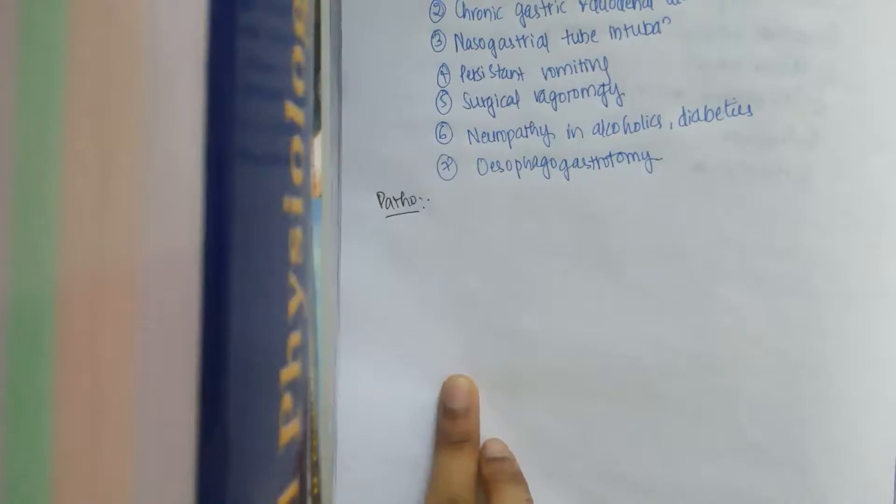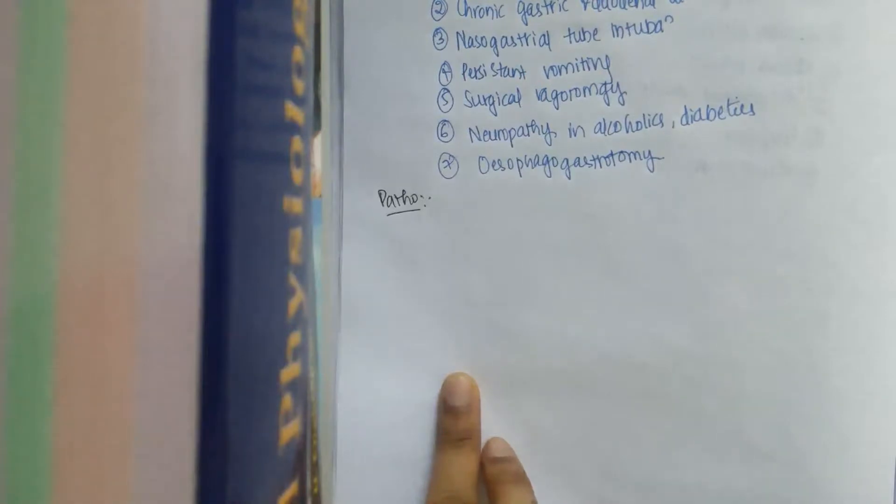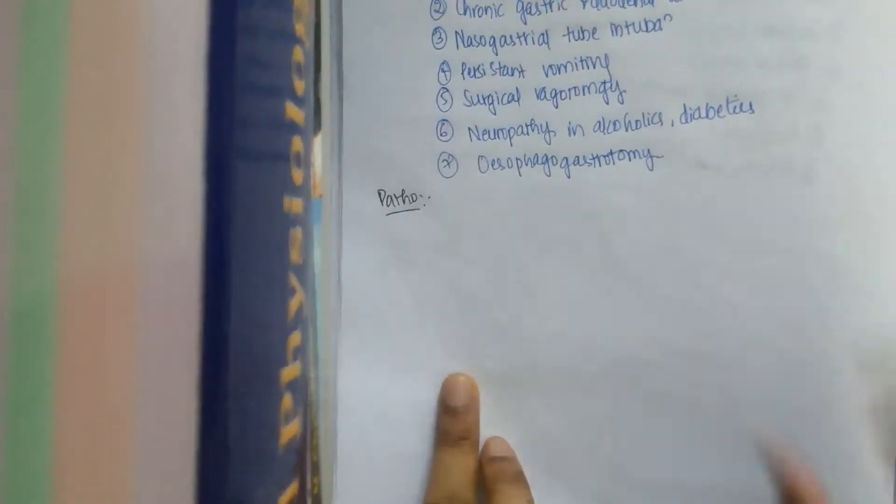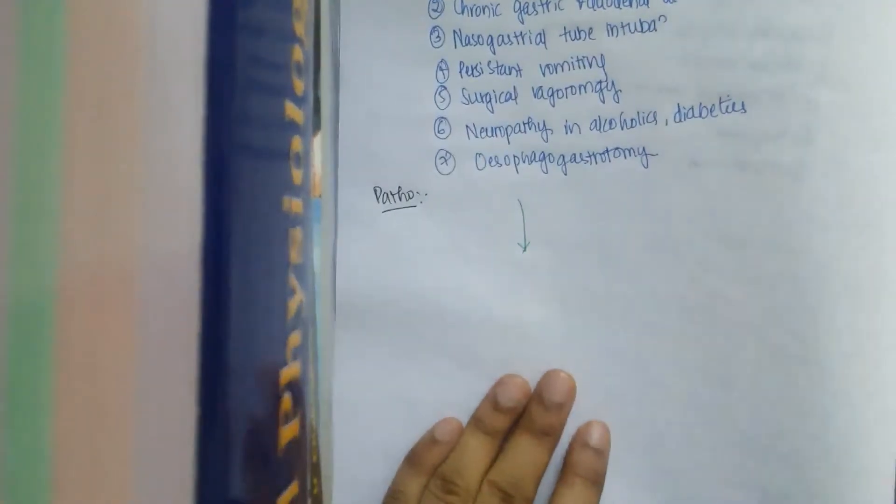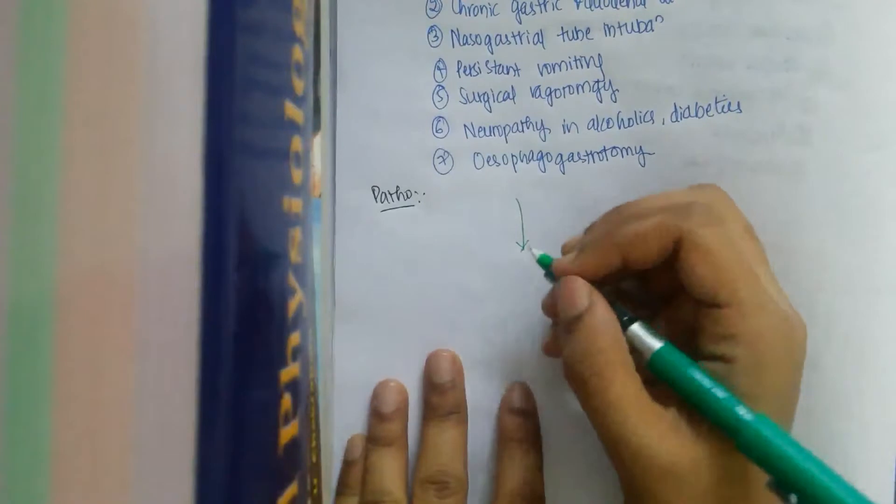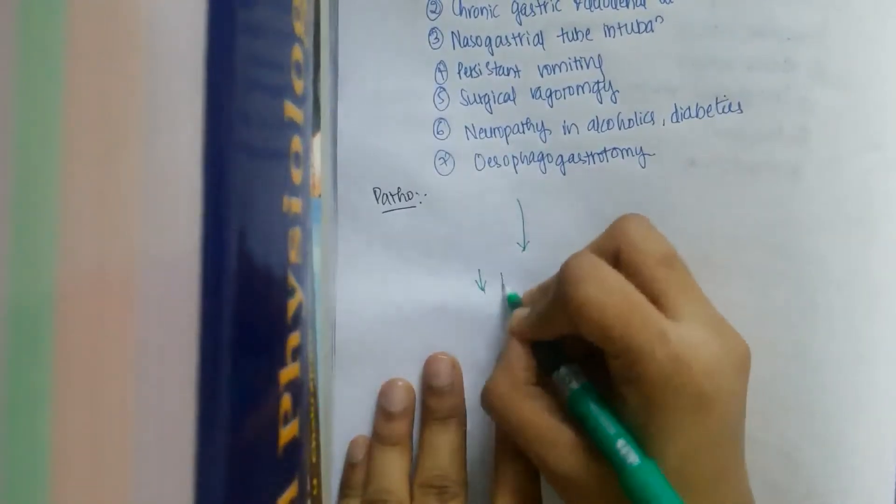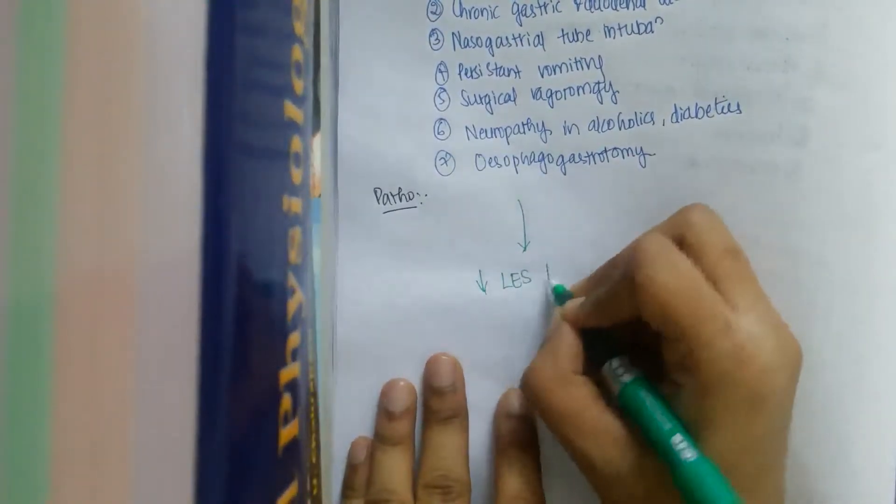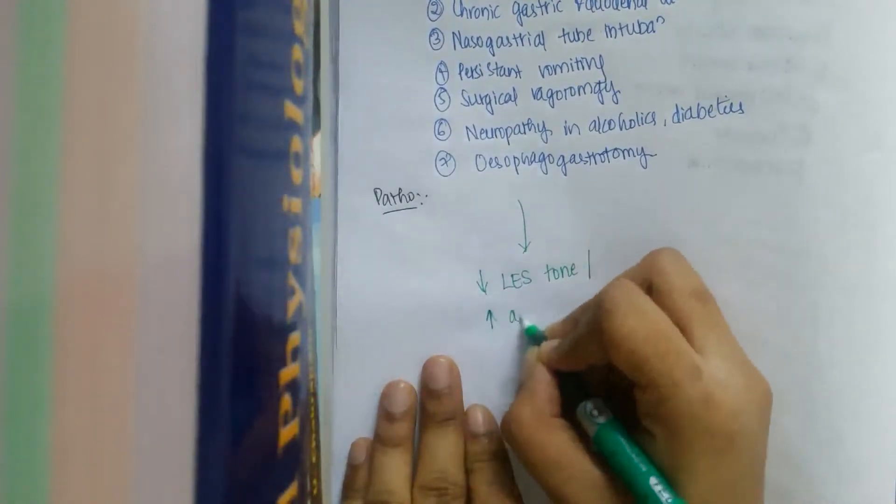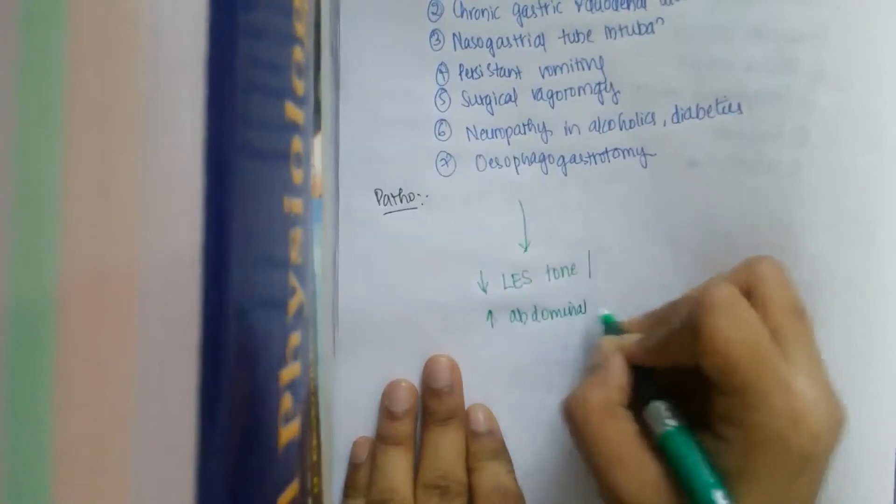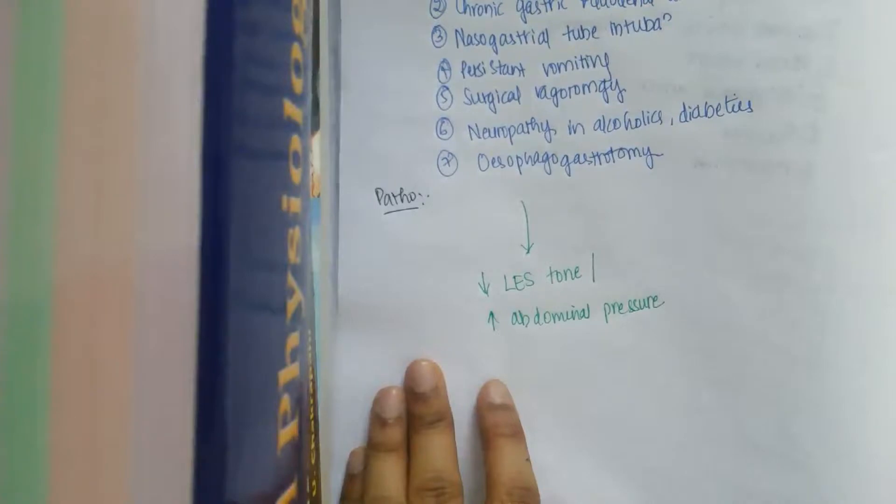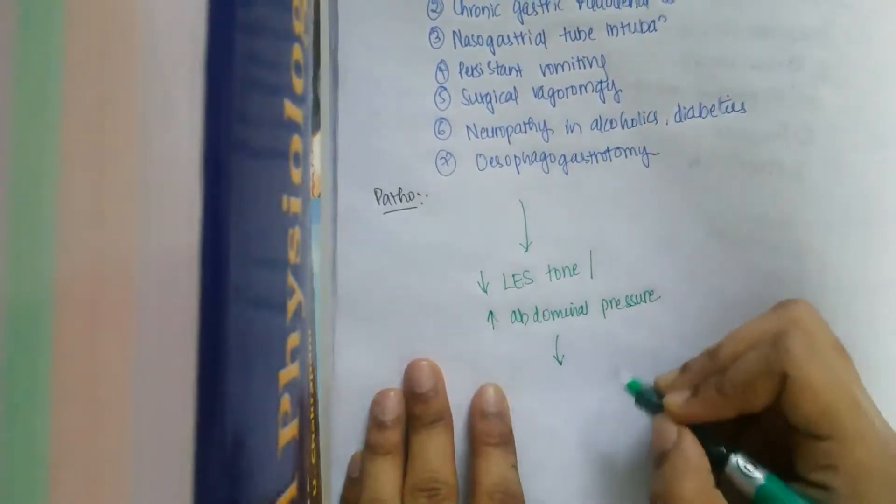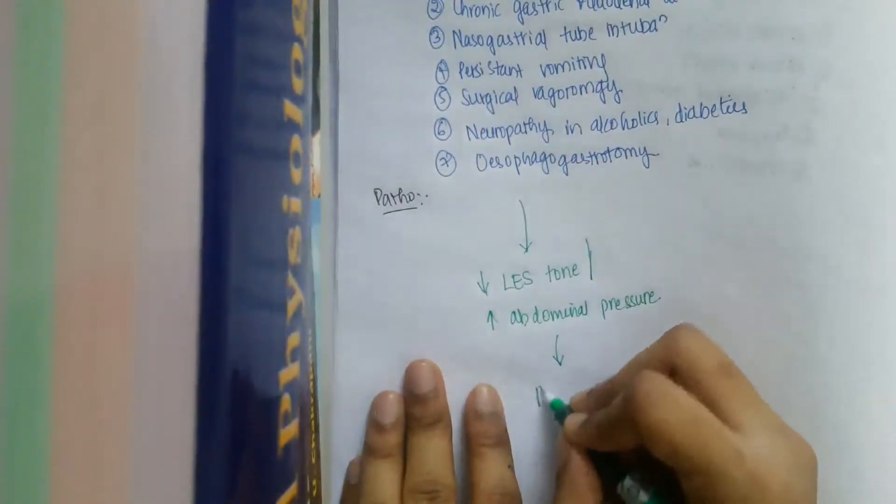There is duodenal bile reflux, there is duodenal acidic reflux. What majorly causes? All these conditions which we have discussed earlier basically lead to decrease in lower esophageal sphincter tone or increase in abdominal pressure. All these lead to reflux esophagitis.